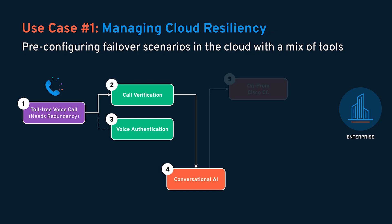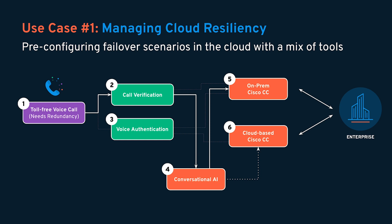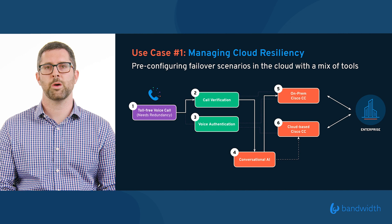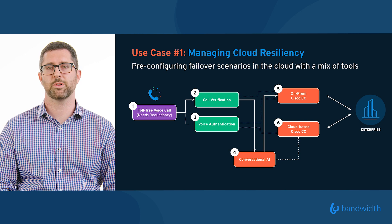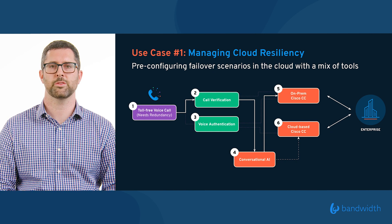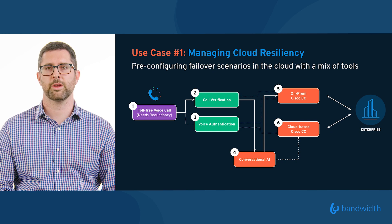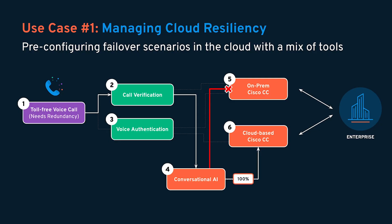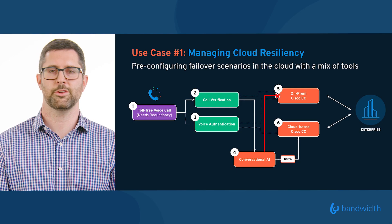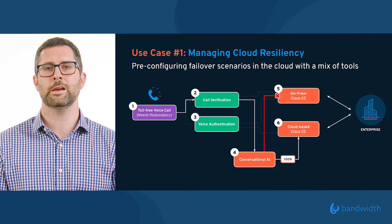This particular customer is using an on-premise Cisco environment today and is moving to the cloud — but not overnight. So they're connecting from that conversational AI tool into a cloud-based Cisco WebEx calling solution. Their primary destination is on-prem, but sometimes things happen and that location may need to fail over to the cloud-based solution. With a couple clicks of a button and a redistribution of traffic in Bandwidth Maestro — where these elements are already pre-configured — you switch things over and those calls continue to traverse into the human-based contact center using a cloud-based solution.